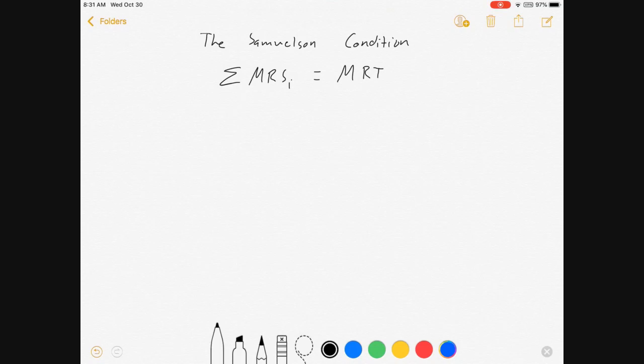So what's the Samuelson condition? It's about the provision of public goods. Public goods get under-provided in private markets. So Paul Samuelson came up with an idea of a way to find the optimal level of public goods.